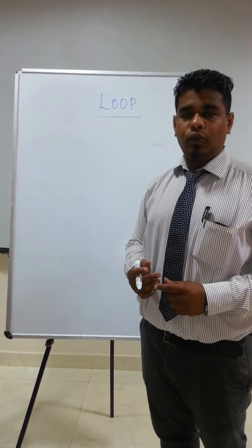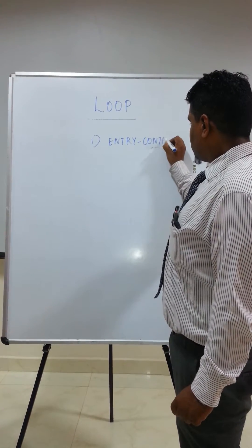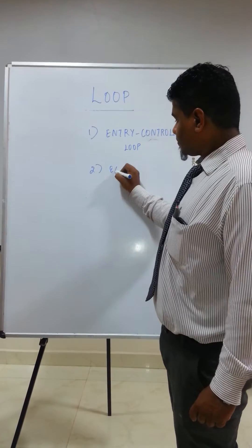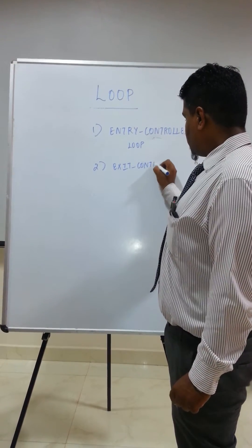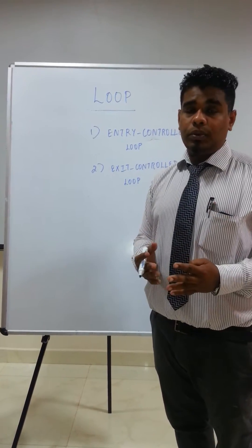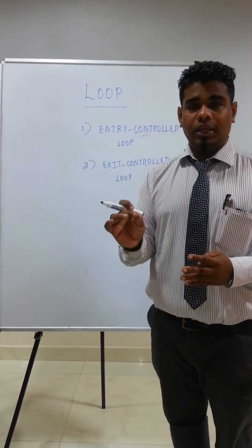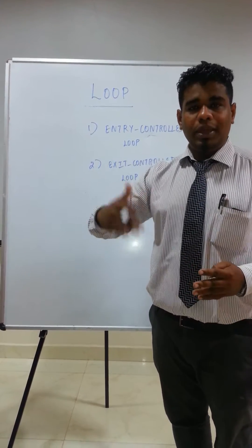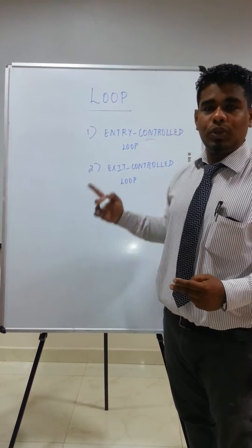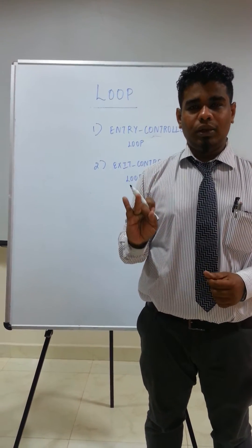There are two categories of looping statements. One is entry control loop, and the other one is exit control loop. In the entry control loop, the condition will be evaluated at the beginning, and only then the body of the loop will be executed. In the exit control loop, the body of the loop will be executed at least once, and after that it will check the condition. In programming languages, we have three different types of loops: for loop, while loop, and do-while loop.